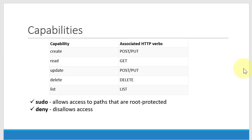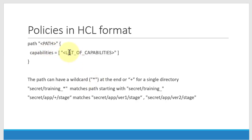These capabilities are associated with HTTP verbs. For POST or PUT, the equivalent capabilities would be create or update. For GET it will be read, for DELETE it will be delete, and list is list. Along with these, we also have sudo, which provides permissions like a root user with every privilege on every path, and deny, which explicitly disallows access. Against any path, I can have multiple capabilities listed, and paths can accept wildcards as well.